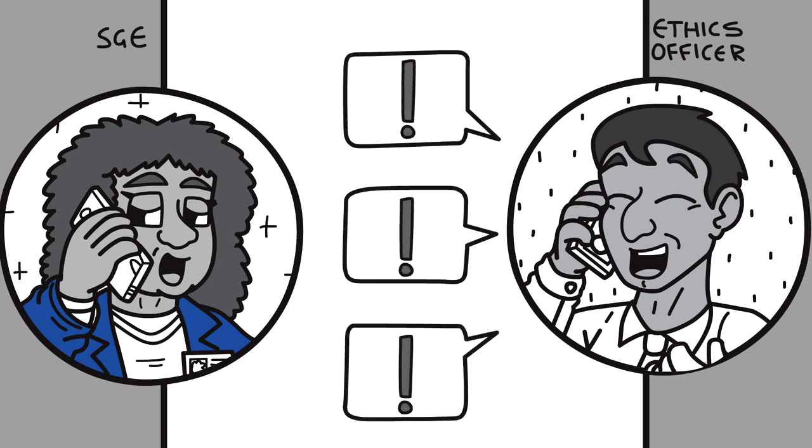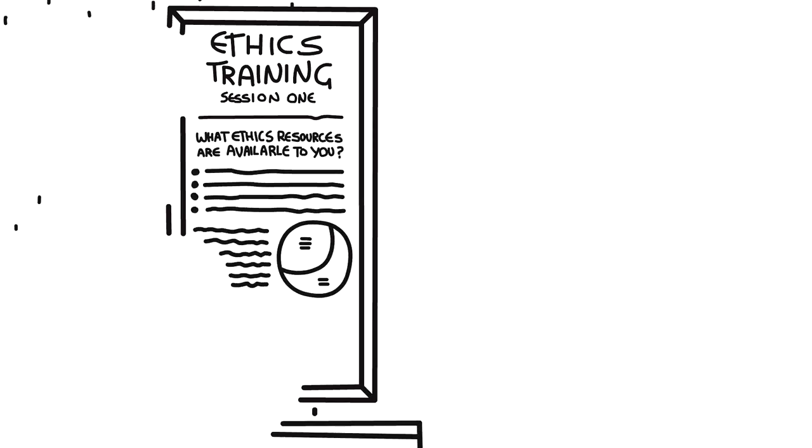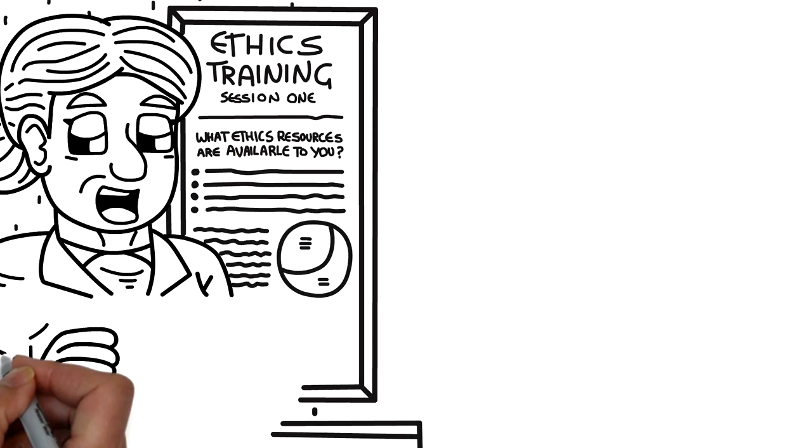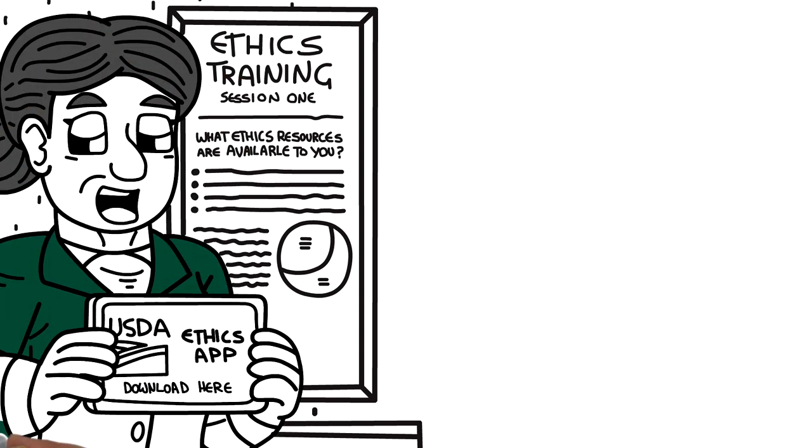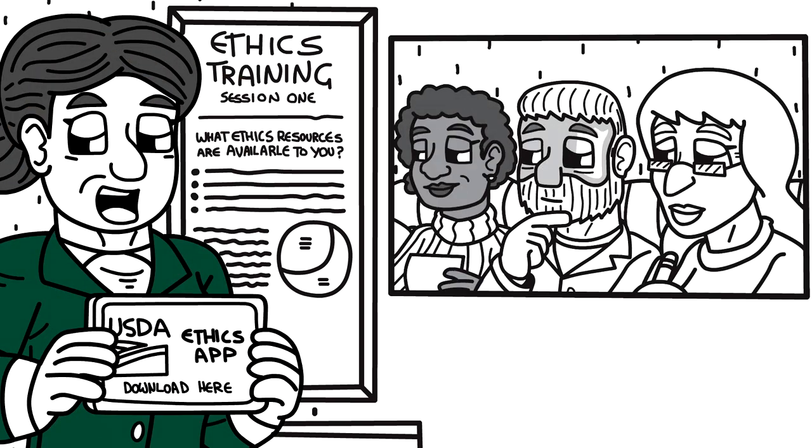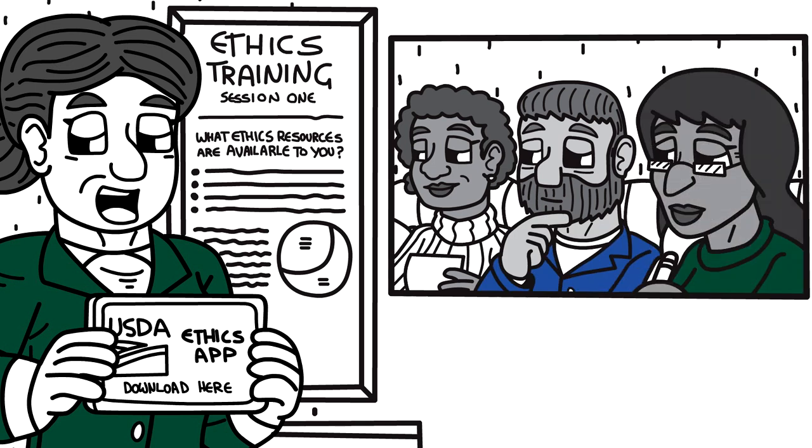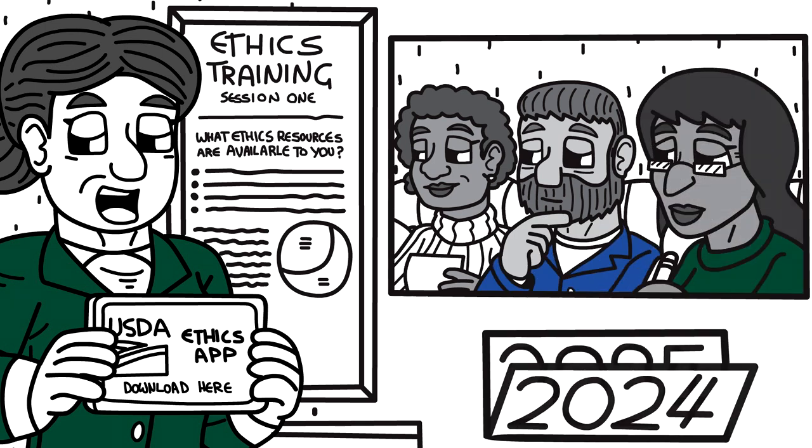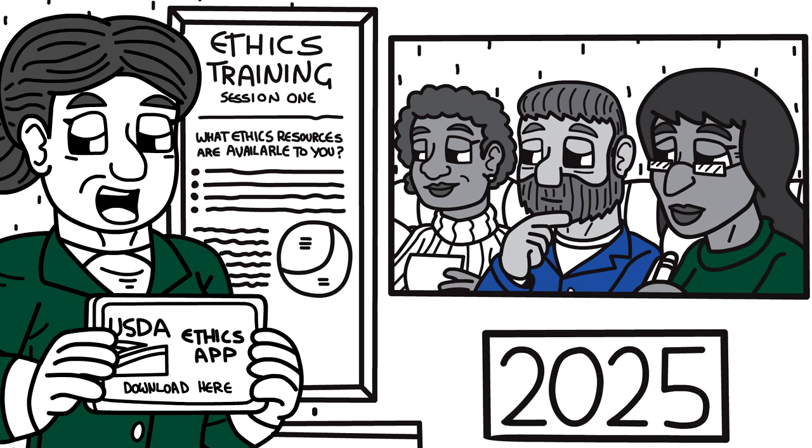Second, you'll need to attend an ethics training session at your initial advisory committee meeting to make sure you're aware of the ethics and conflict of interest rules that apply to you as an SGE. You'll need to keep your knowledge fresh, attending ethics training every calendar year that you serve on the committee. At USDA, these ethics trainings are provided by a member of the USDA Office of Ethics.